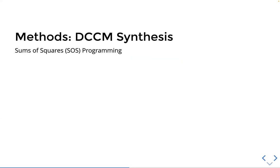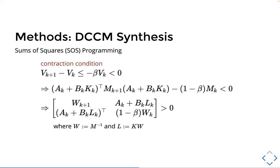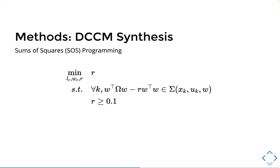So how do we actually go about synthesizing this controller and metric? We can use sums of squares programming and search over the class of polynomials, which are sums of squares. So we start with this contraction condition in terms of the differential Lyapunov function that we saw earlier and substitute in the delta X's A and B matrices and K matrices to get this condition, which then we transform using Schur complement and by left and right multiplying by invertible matrix to get this condition where this matrix now needs to be positive definite. And W is defined to be M inverse and L is KW.